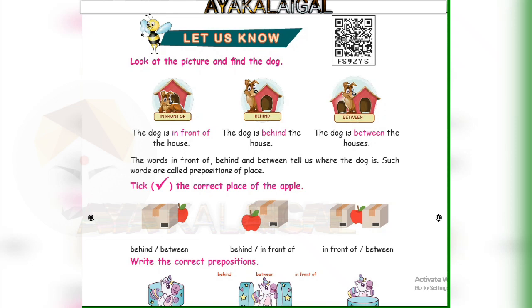Next, we have two prepositions. We have to tick the correct place of the apple. Is the apple behind or between the box? Find the correct place of the apple using in front of, behind, or between.